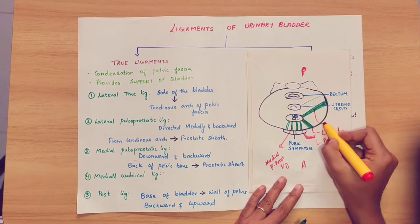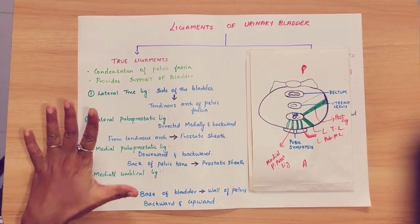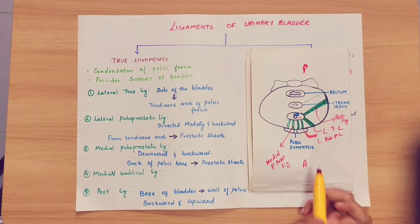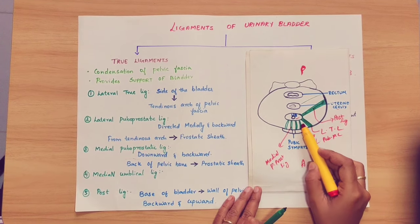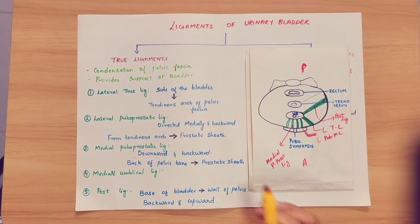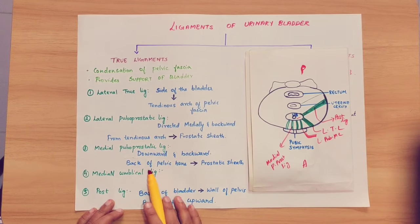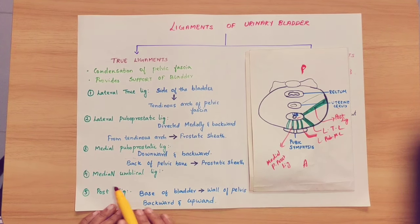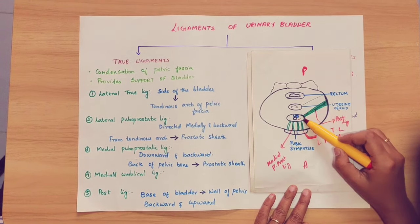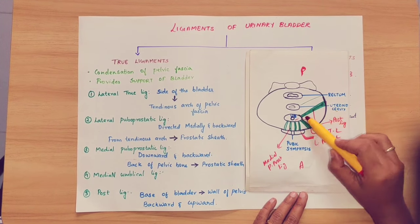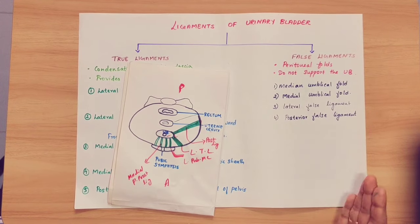At the apex of the urinary bladder is the posterior ligament. So these are the five true ligaments of the urinary bladder. Coming to the false ligaments — as already mentioned, false ligaments are merely peritoneal folds that support the position of the urinary bladder.